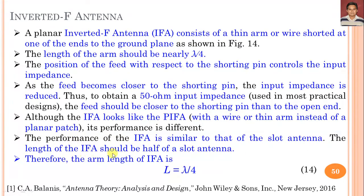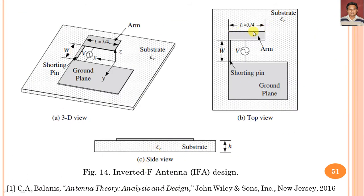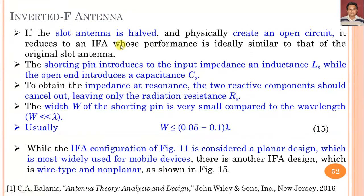The length of the IFA should be half of the slot antenna. In a slot antenna this length is equal to lambda by 2, but in the case of the inverted F antenna this length is equal to L = lambda by 4. This is the important design parameter through which we can calculate the length of the inverted F antenna when the frequency of operation and substrate properties are given. If the slot antenna is halved to physically create an open circuit, it reduces to an IFA whose performance is ideally similar to that of the original slot antenna.